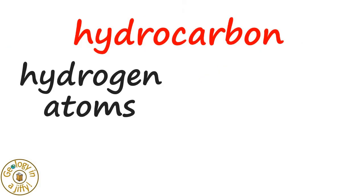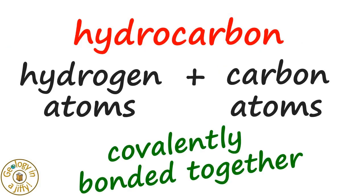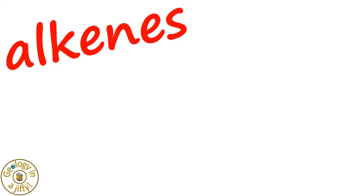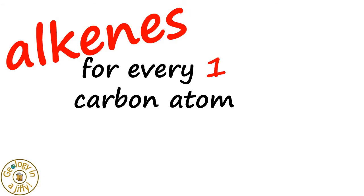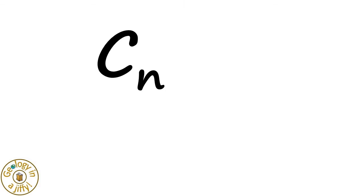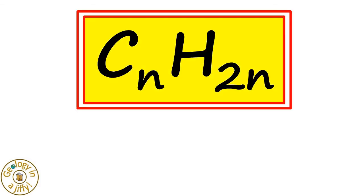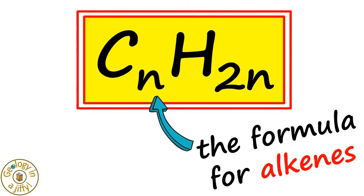A hydrocarbon is made of hydrogen atoms and carbon atoms all covalently bonded together. In alkenes, for every one carbon atom there are two hydrogen atoms, giving us a formula to work out what are in alkenes.